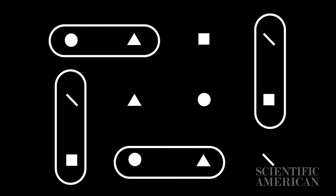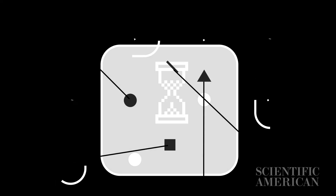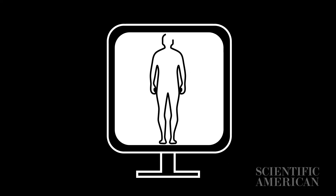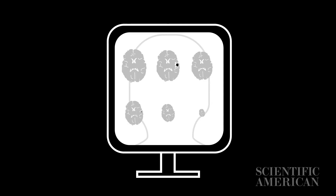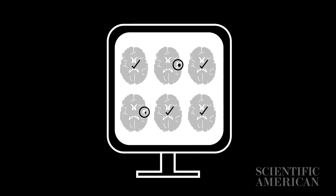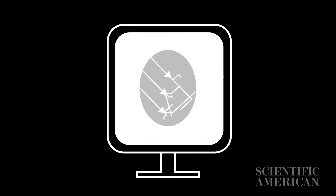Based on the patterns they find, computers develop a kind of model of how that system works. For instance, some programmers are using machine learning to develop medical software. First, they might feed a program hundreds of MRI scans that have already been categorized. Then they'll have the computer build a model to categorize MRIs it hasn't seen before.